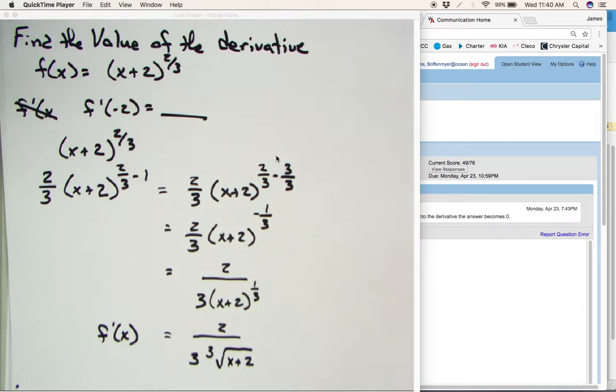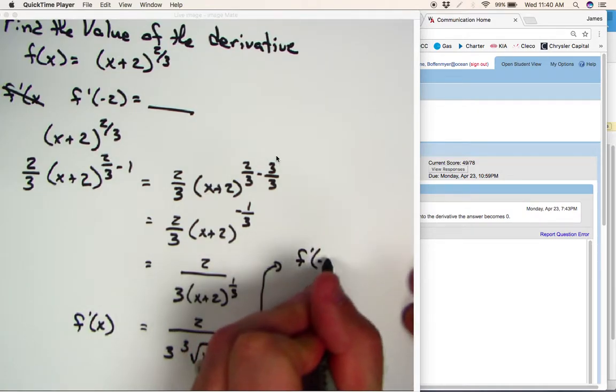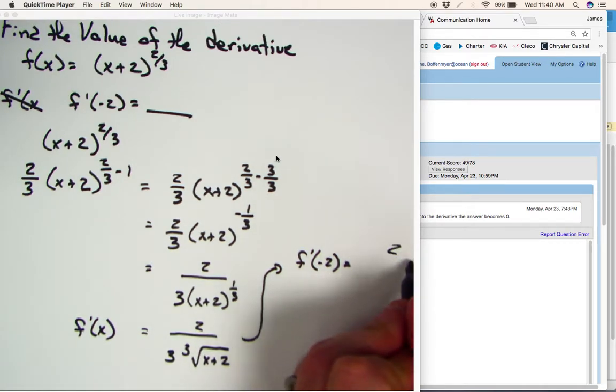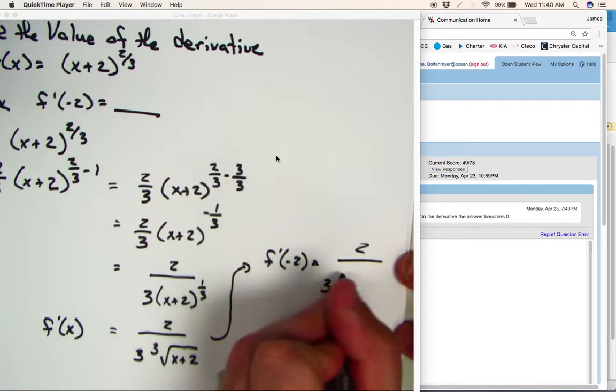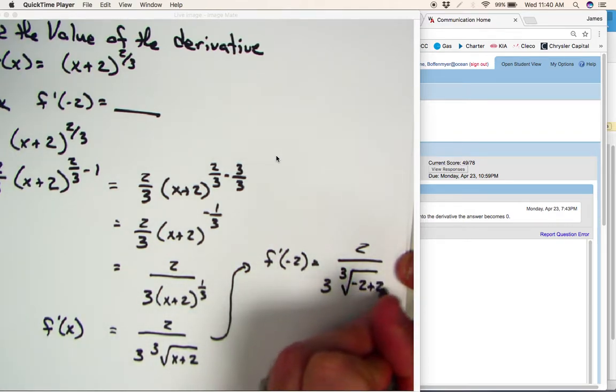Now, to find f prime of negative 2, f prime at negative 2, we simply just plug in a negative 2 in for every x we have in our derivative. So that would be 2 over 3 times the cube root of a negative 2 plus 2.